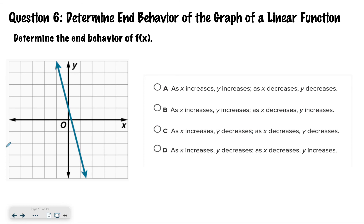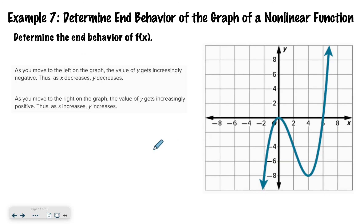Now look at this graph and figure out the end behavior of f(x). Hopefully you said: as x increases, y decreases, and as x decreases, y increases — which is letter D. If you have questions about that, be sure to ask for some help.